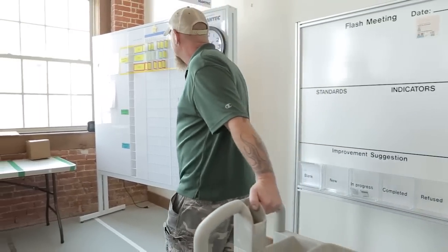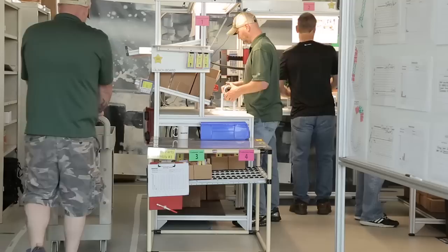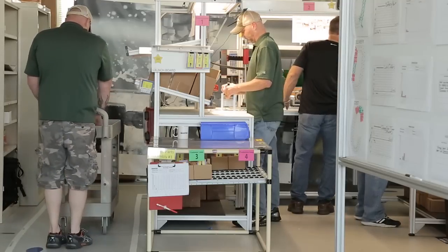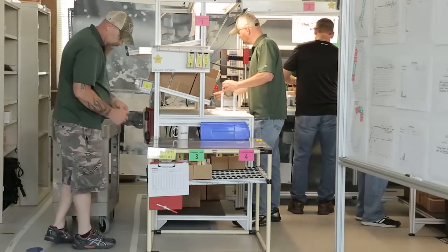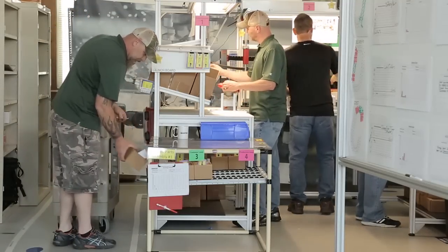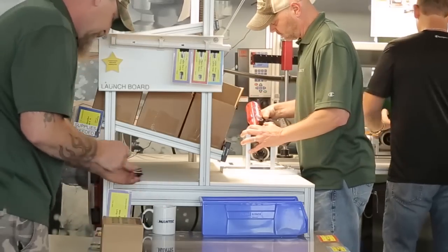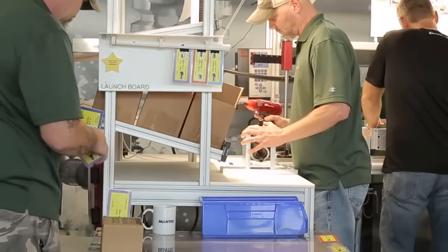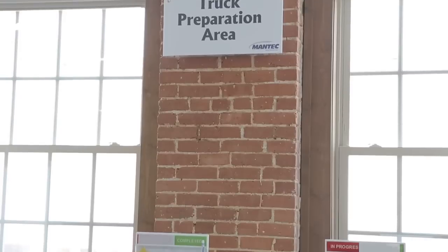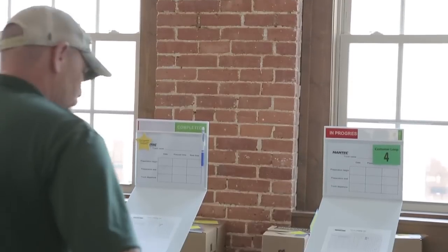At the predetermined times, the material handler takes the cards out of the slots and walks a predetermined route to pick up the parts. As they do this, they send information back to the production area to tell them what to make based on what was pulled out. That part is then taken to the truck preparation area to prepare shipments 1-5 days in advance.